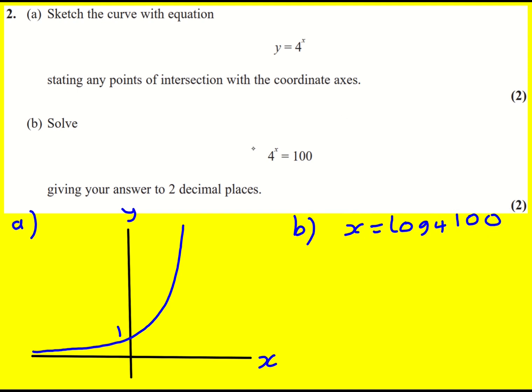If you prefer, you can take log to base 4 of both sides. Let me do it here. Now you bring the x down, then we just get log to base 4 of 4 which is 1. You get exactly the same thing.